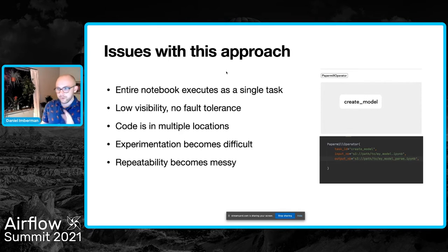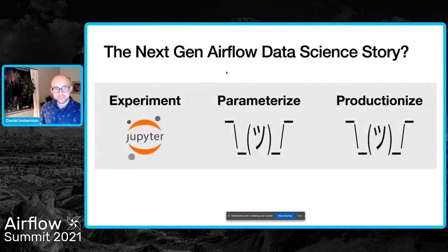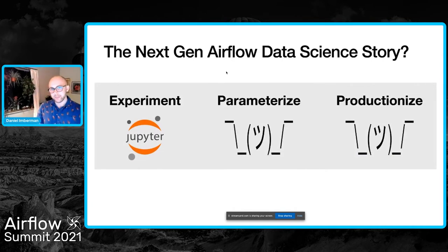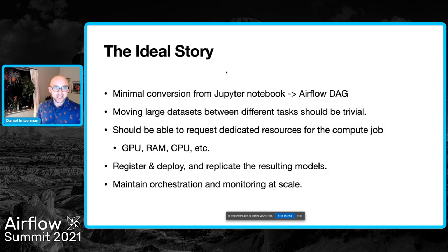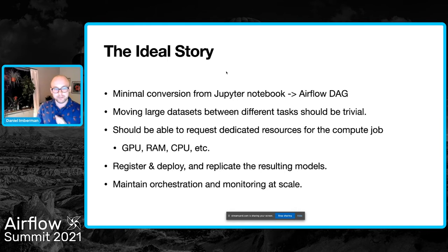It creates a trade-off between experimentation and repeatability. So we went back to the drawing board and asked ourselves: what would the next generation of Airflow data science look like? What would it look like past that notebook-to-parameterize-and-productionize model? What is the ideal story? Well, the ideal story is that you go from a Jupyter notebook to an Airflow DAG with the minimal amount of code conversion possible.